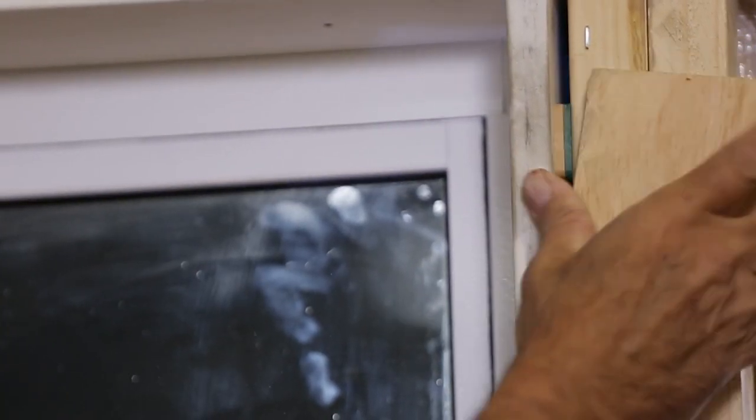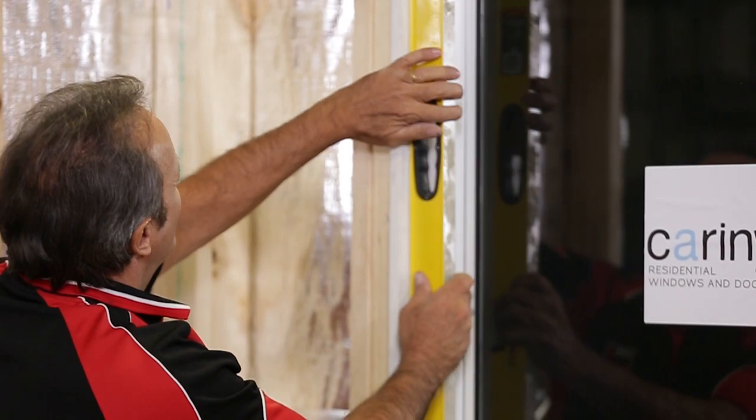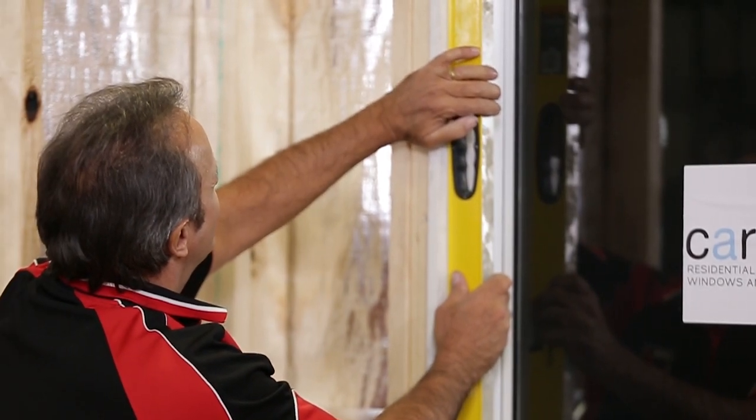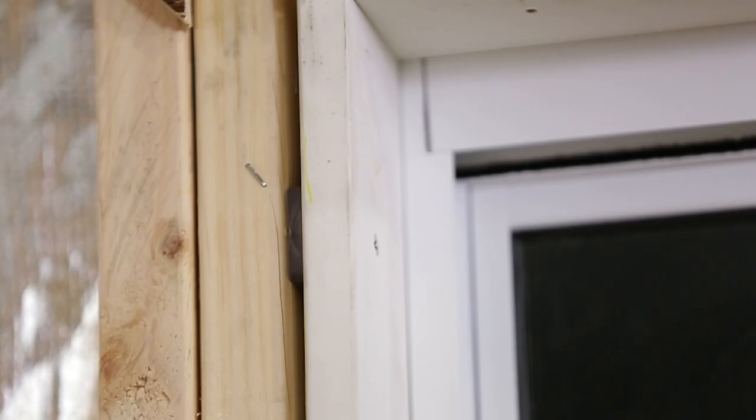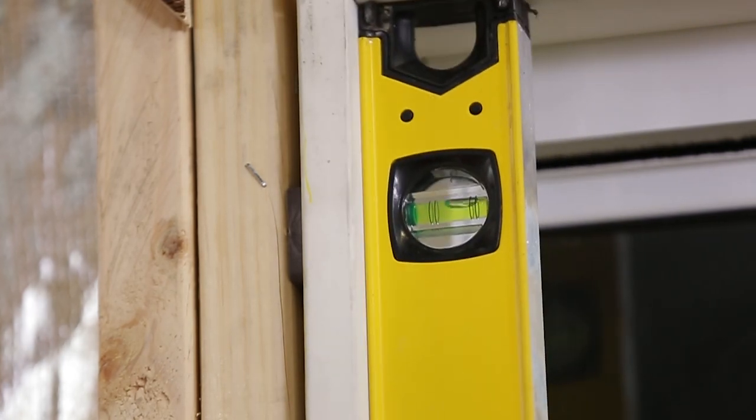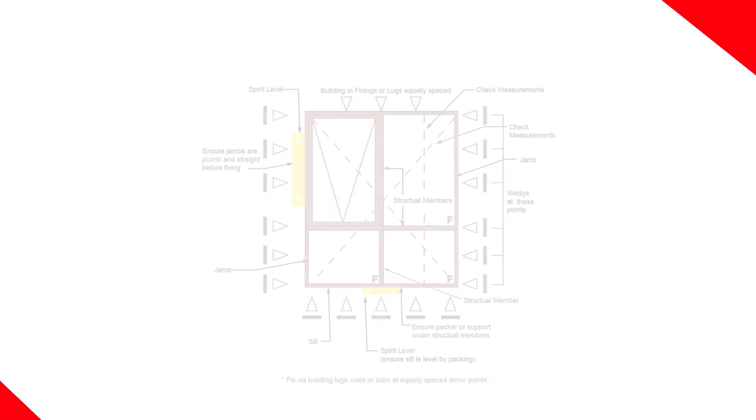Fix the top corners in place. Check jams are plumb using your level and adjust window position as necessary to make sure the window is plumb, level, and square with even clearances around the sash. It may take a few goes to get it right, but it's important, so take your time.